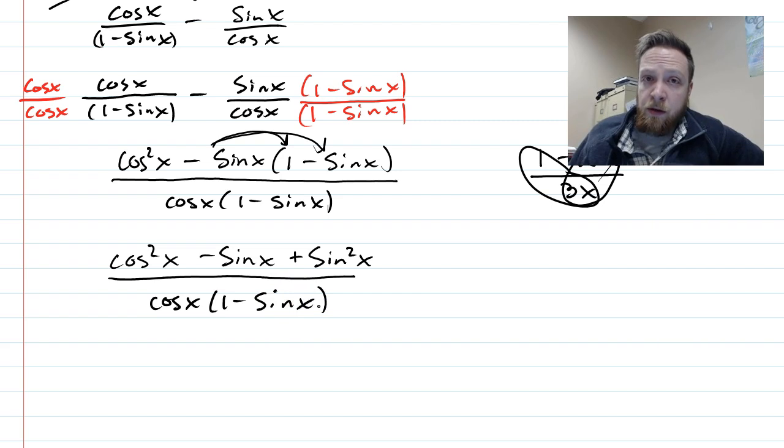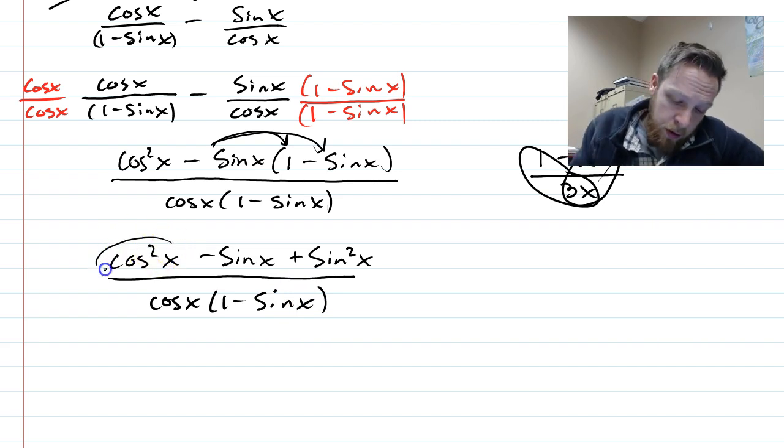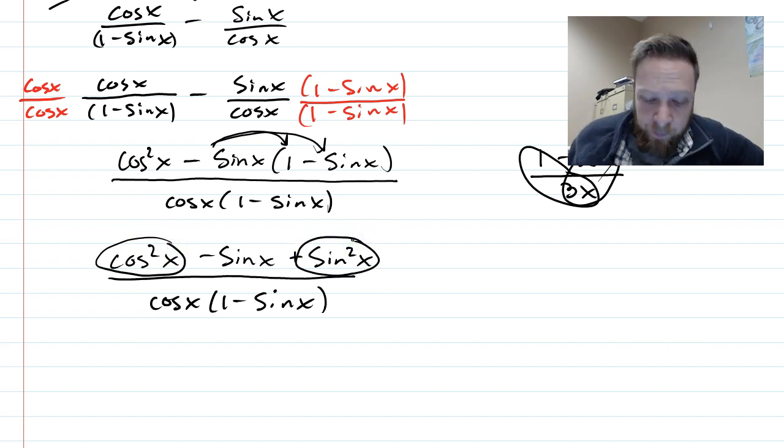Okay, now based on our lesson, our last video, we know cosine squared and sine squared, when they're added together, and in this case they're both positive, they're being added together, that is just the same as one.